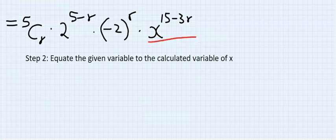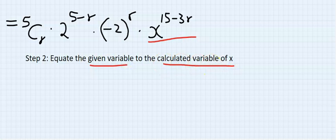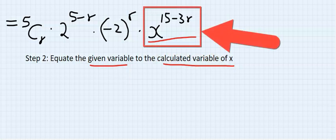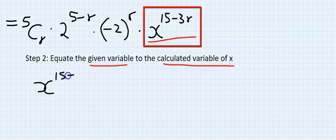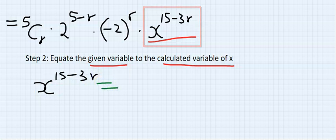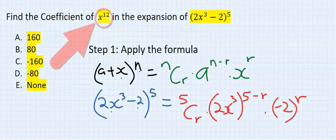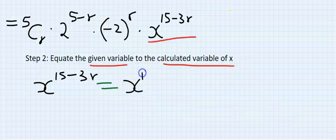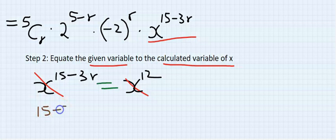Step 2: Equate the given variable to the calculated variable of x. Our calculated variable of x is x to the power of (15 − 3r), while our given variable is x to the power of 12. So I cancel the x's and write: 15 − 3r = 12.